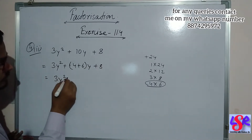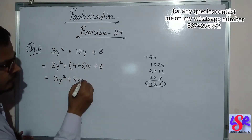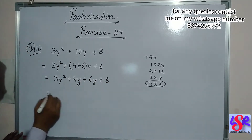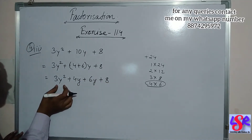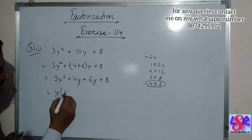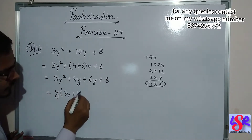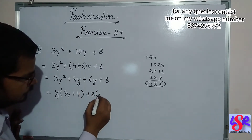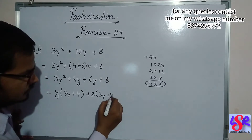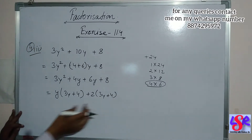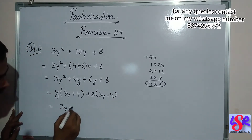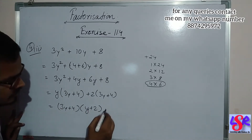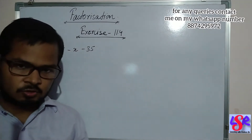Now this will be 3y square plus 4y plus 6y plus 8. We take y common from the first two to get 3y plus 4. From the last two we take 2 as common to get 3y plus 4. So taking 3y plus 4 as common, the answer is 3y plus 4 into y plus 2.